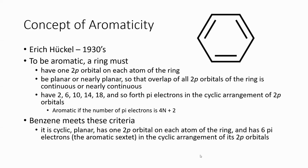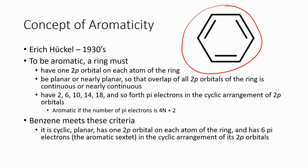This screencast is on aromaticity and aromatic compounds. Aromatic is a term that applies to a broad class of organic molecules. Sometimes it's misused for just benzene, but benzene is simply one of many aromatic compounds. So the term aromatic and benzene shouldn't be used interchangeably — the benzene ring is simply the benzene ring, but many compounds can qualify as aromatic.